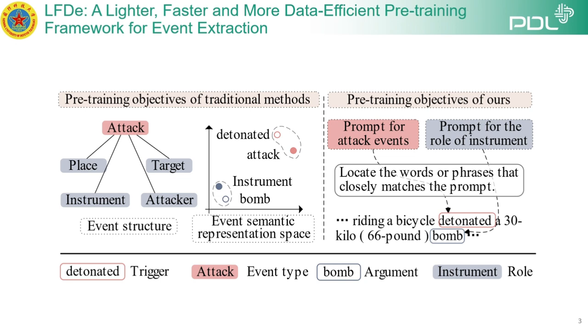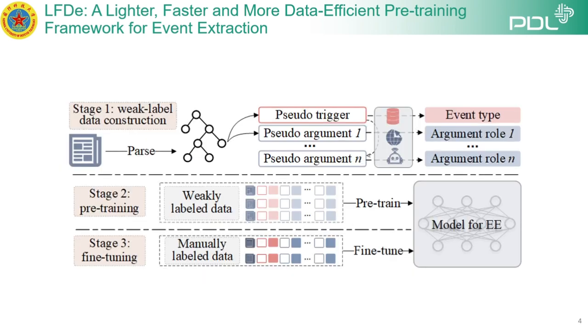As shown in this figure, existing methods are dedicated to modeling two types of features during their pre-training phases: event structure and event semantic features.